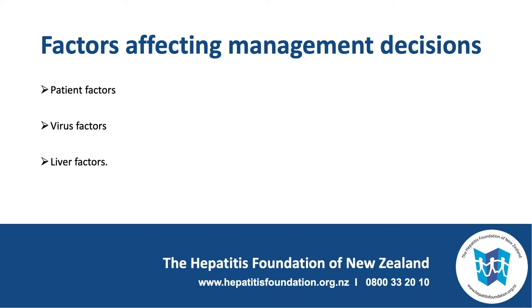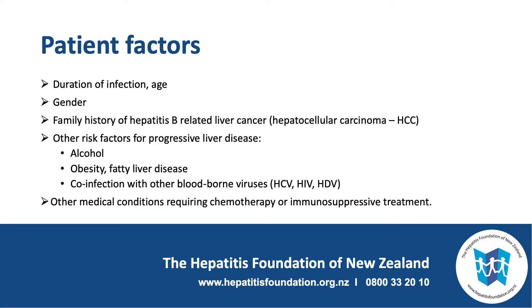From the perspective of the patient, it is important to consider how long they may have had the infection, and for most people this will be answered by how old they are. Acquisition is usually at the time of birth or at a young childhood age. Males tend to have more advanced liver disease than females and this can sometimes affect treatment decisions. It is also useful to know whether there has been a family history of Hepatitis B related liver cancer, or Hepatocellular Carcinoma (HCC), as if this risk factor is present then the thresholds for treatment should be lower.